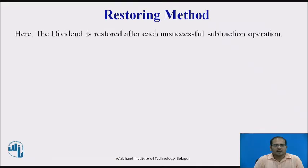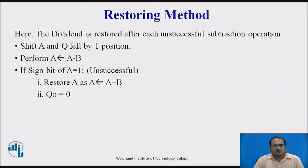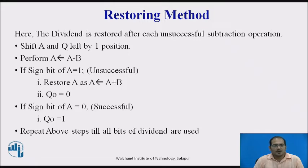The dividend is restored after each unsuccessful subtraction operation. First, shift the content of A and Q registers left by one position, then perform A minus B. If the sign bit of A is 1 — an unsuccessful subtraction, i.e., negative — restore A as A plus B and set Q0 to 0. If the sign bit of A is 0 — a successful subtraction — set Q0 to 1. Repeat these steps until all bits of the dividend are used.